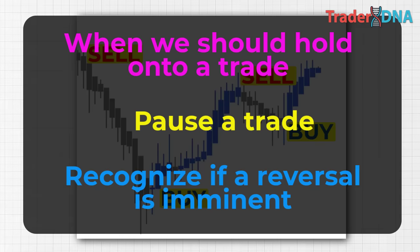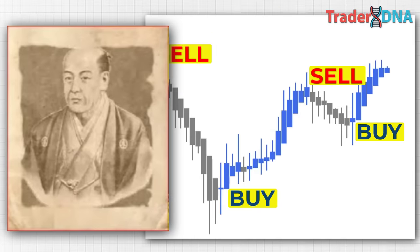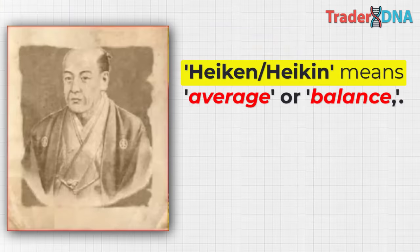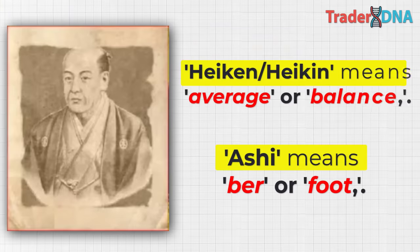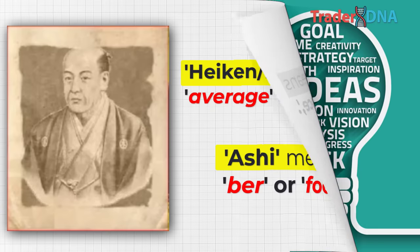The Heikin Ashi trading technique was developed by Munahisa Hama in the 1700s. While sharing some characteristics with traditional candlestick charts, it differs in how candlestick values are computed. In Japan, Heikin means average or balance, and Ashi means bar or foot. Thus, Heikin Ashi translates to average bar, aligning with the trading technique's utilization of the security's average price.